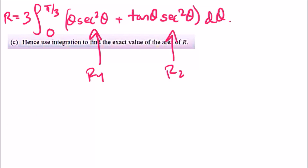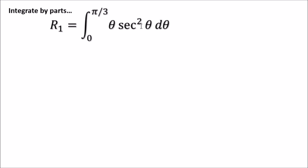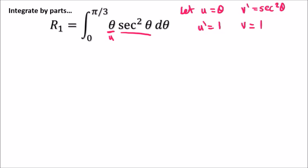For R1, we integrate θ sec²θ by parts, because θ is easy to differentiate and would eliminate down to a constant. Let u = θ and v' = sec²θ. Differentiating gives u' = 1, and integrating sec²θ gives v = tanθ, since the derivative of tanθ is sec²θ.